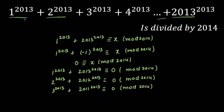Now notice that we have an odd number of terms — 2013 total — so we cannot pair every term exactly. One term will remain unpaired: the middle term, which is 1007^2013.